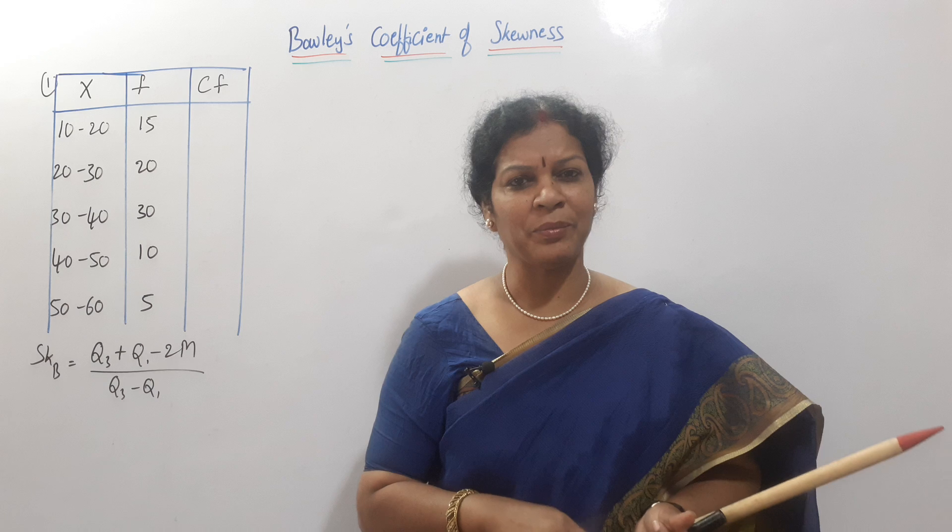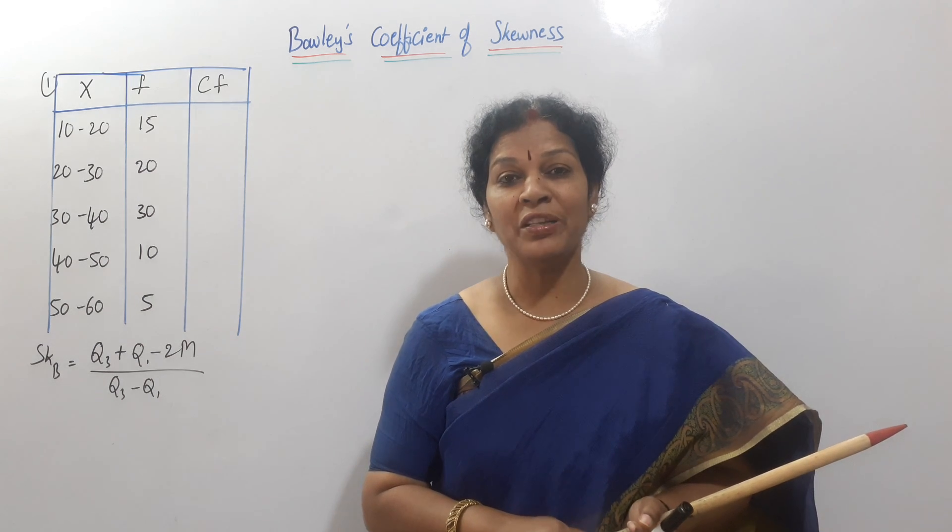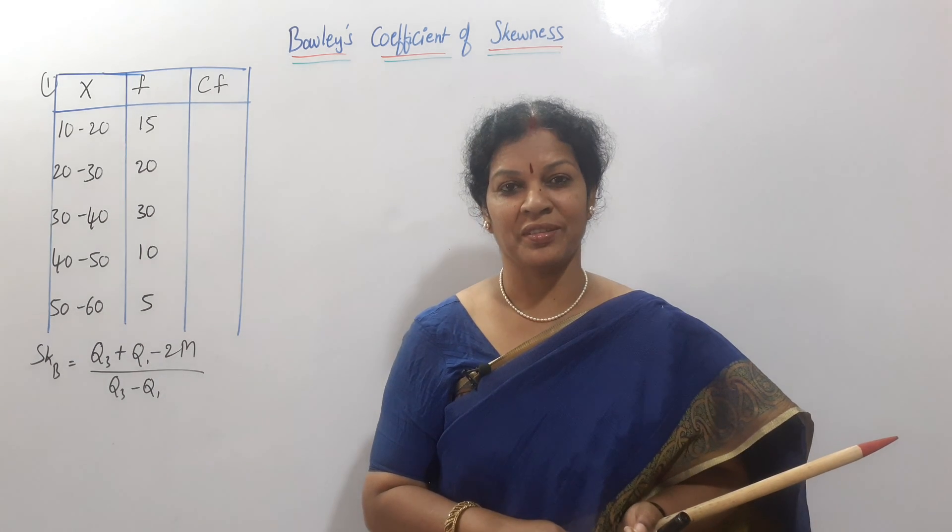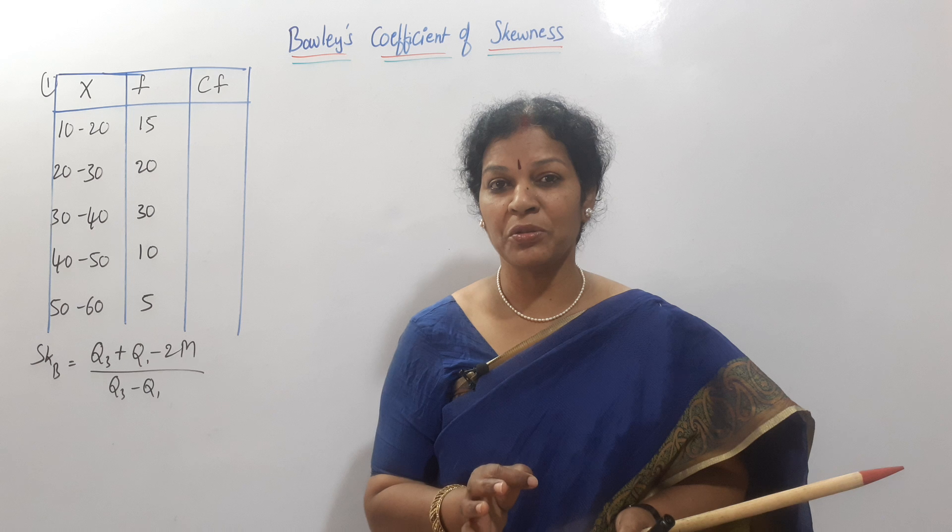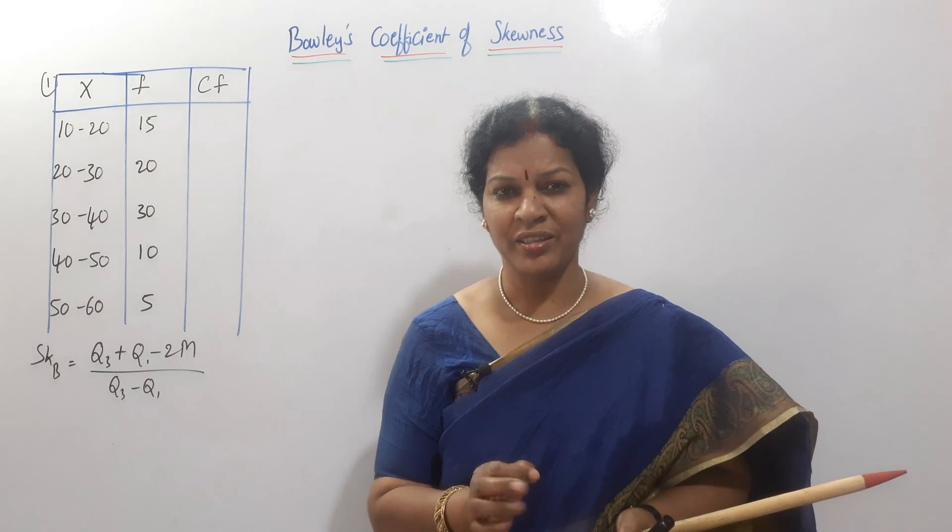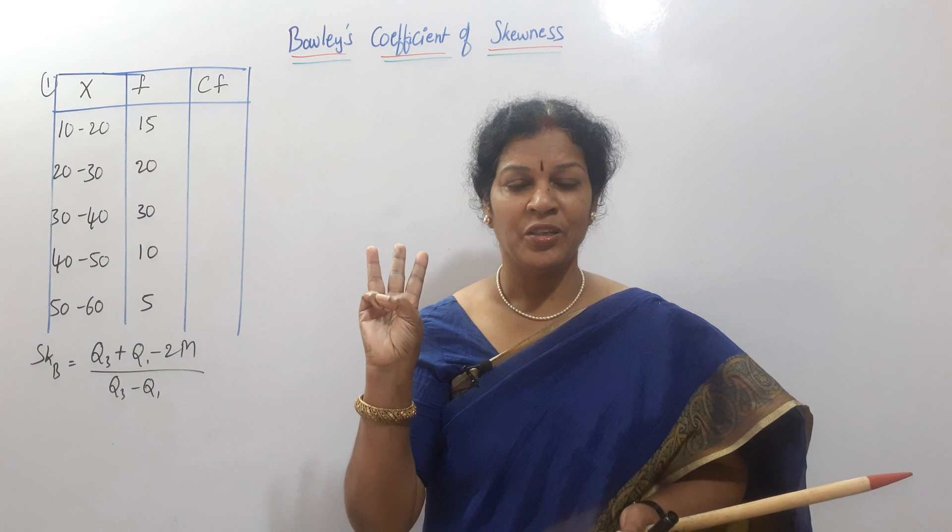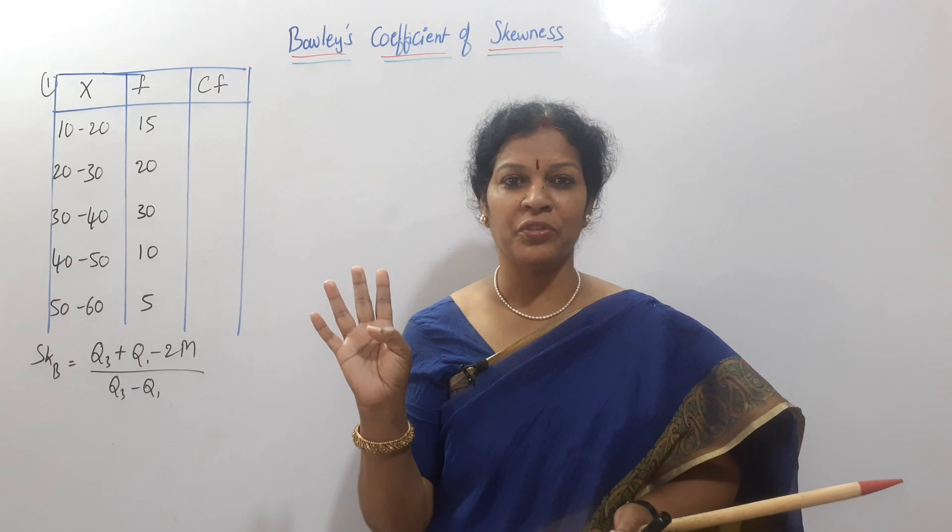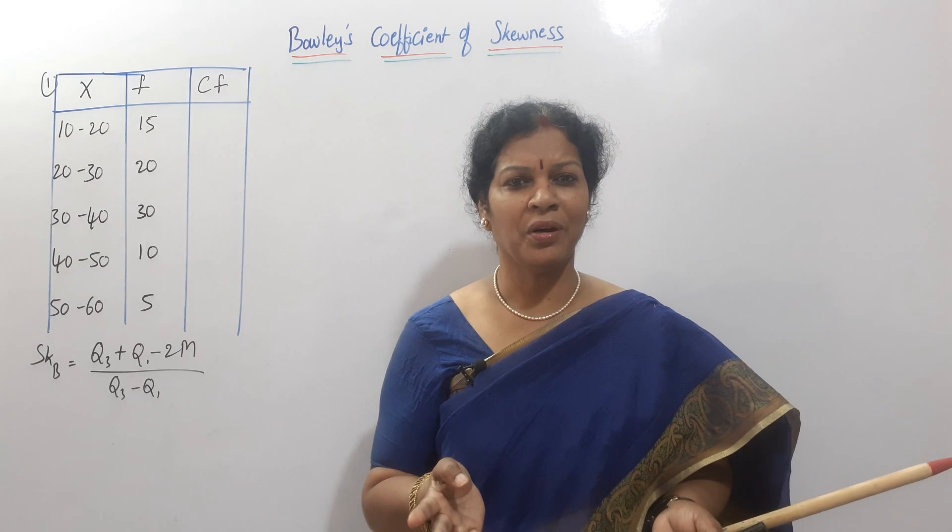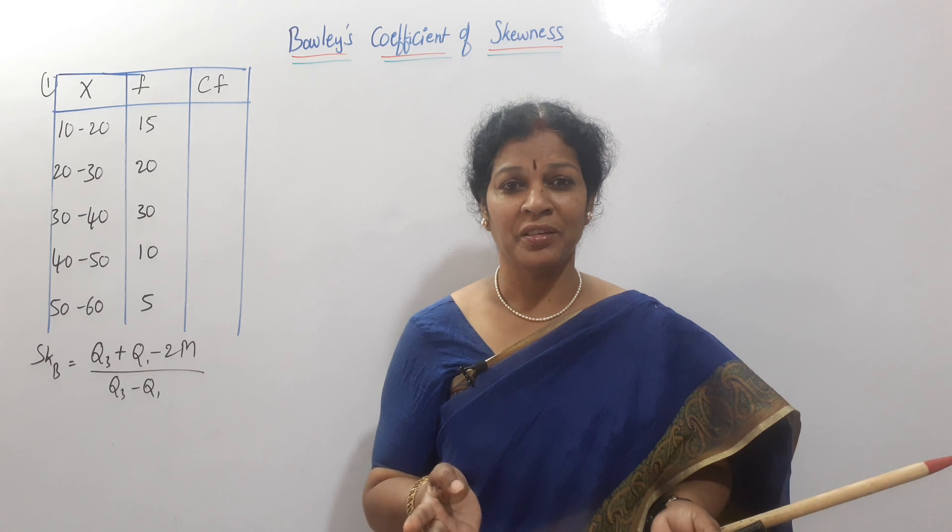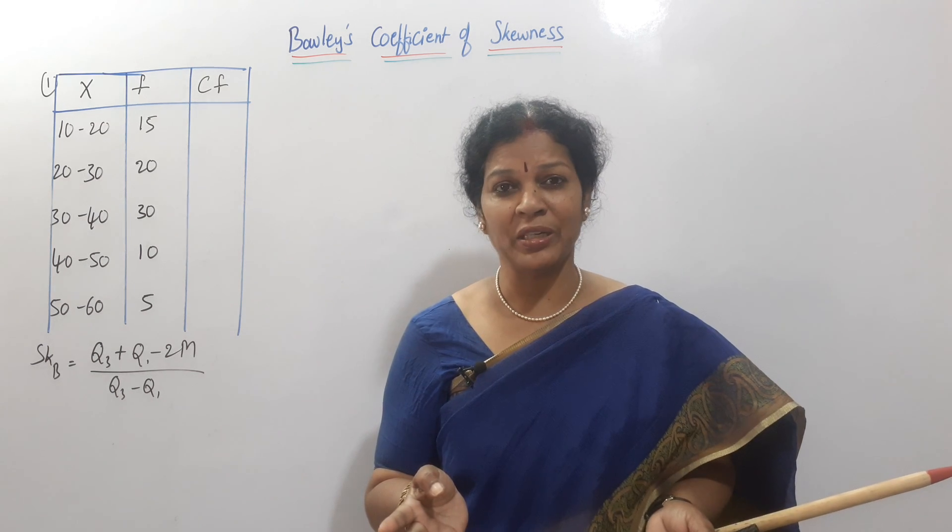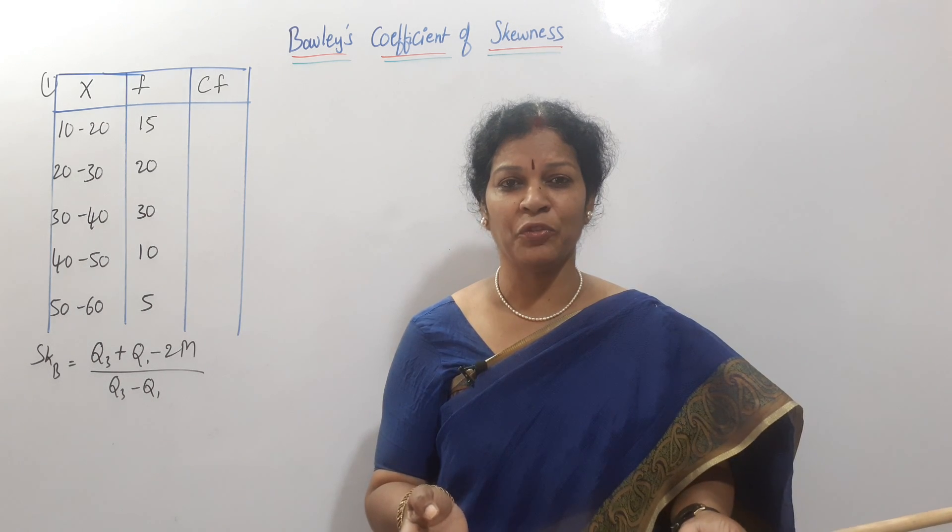Now today, only one class I am taking, that is for Bowles' coefficient of skewness. Bowles' coefficient of skewness is mainly based on median, quartile 1, quartile 3. Based on this, you can calculate Bowles' coefficient of skewness. We know how to calculate median, we know how to calculate Q1 and Q3 also, just apply in the formula, that is it.